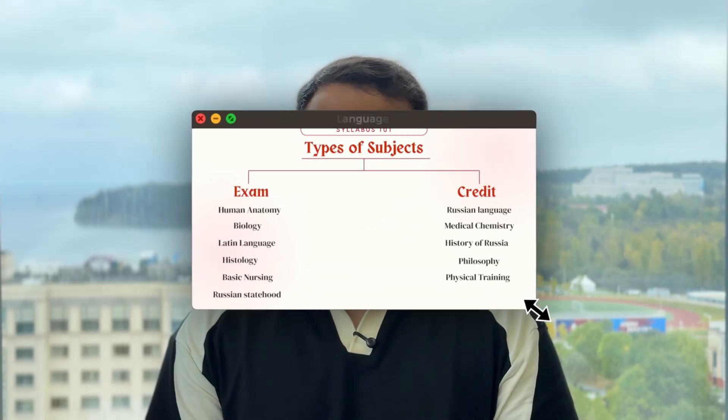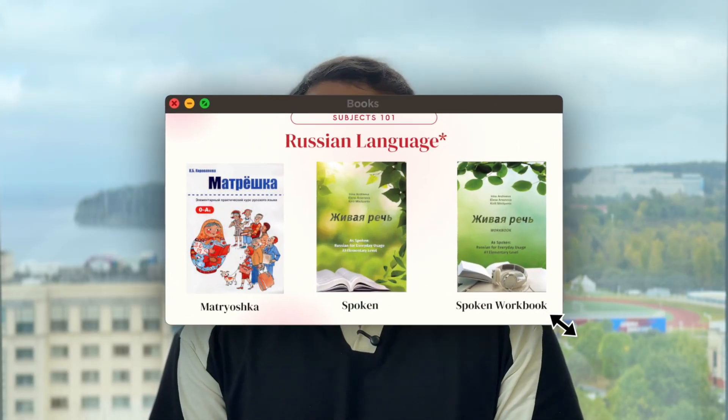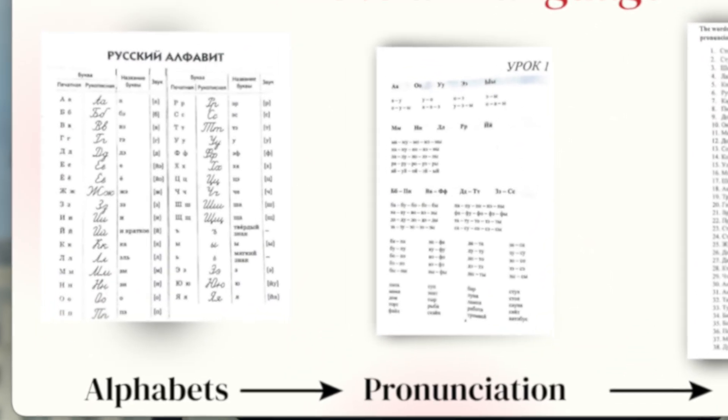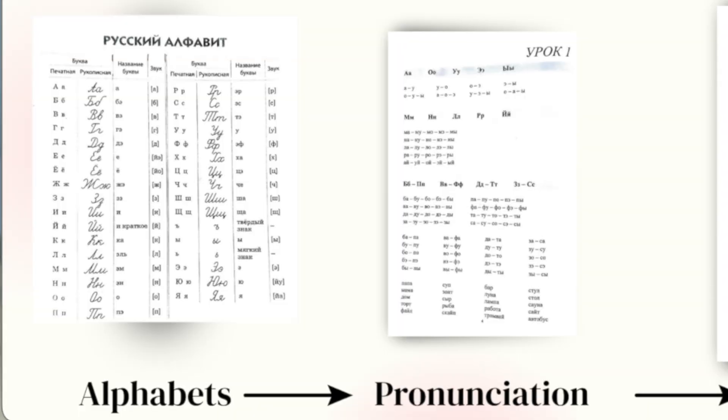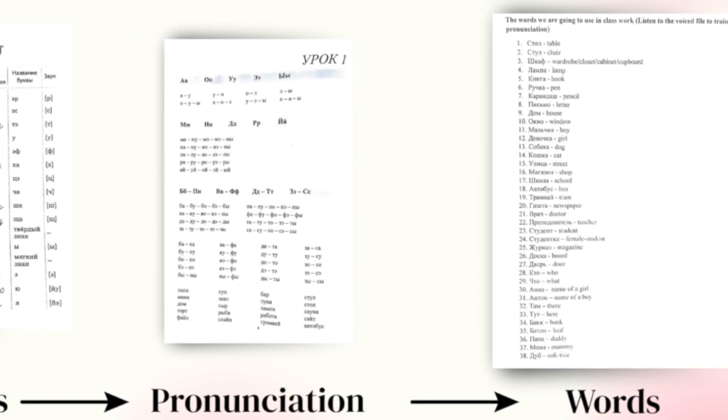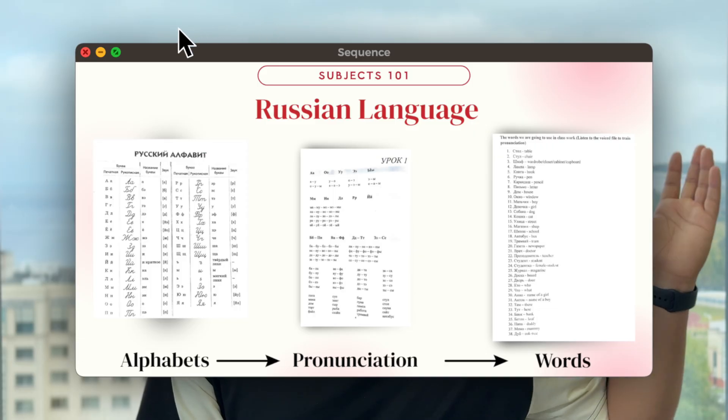The next subject is Russian language. You will be taught in English for your whole six years, but you must learn Russian because outside class, everyone speaks Russian — cab drivers, market vendors, shopkeepers. In first year, you will start learning with the alphabets, then their pronunciation, then combining words and pronouncing them. After that, you will memorize word meanings — for example, 'window' in Russian is 'okno' — then small words, and then big sentences.